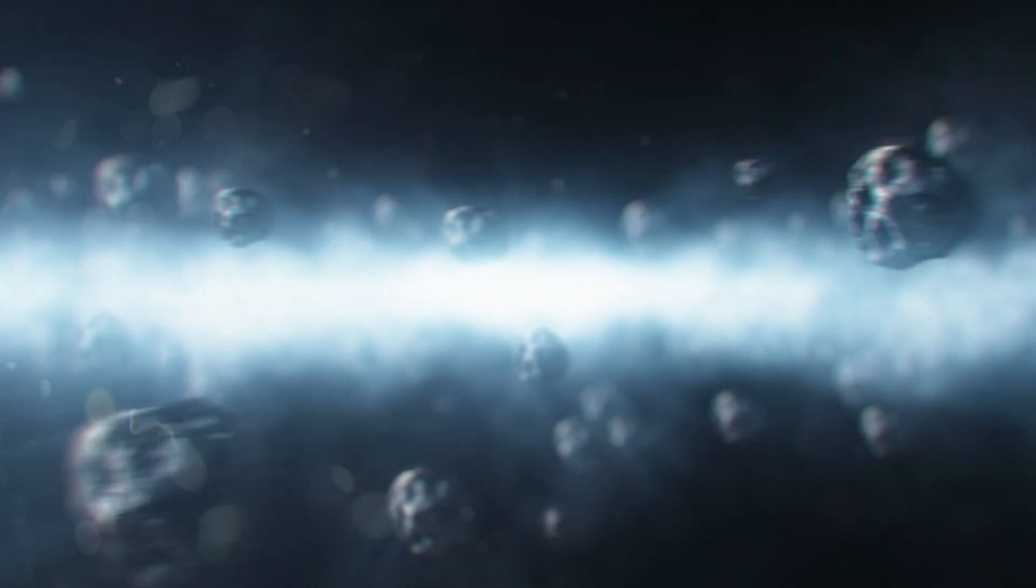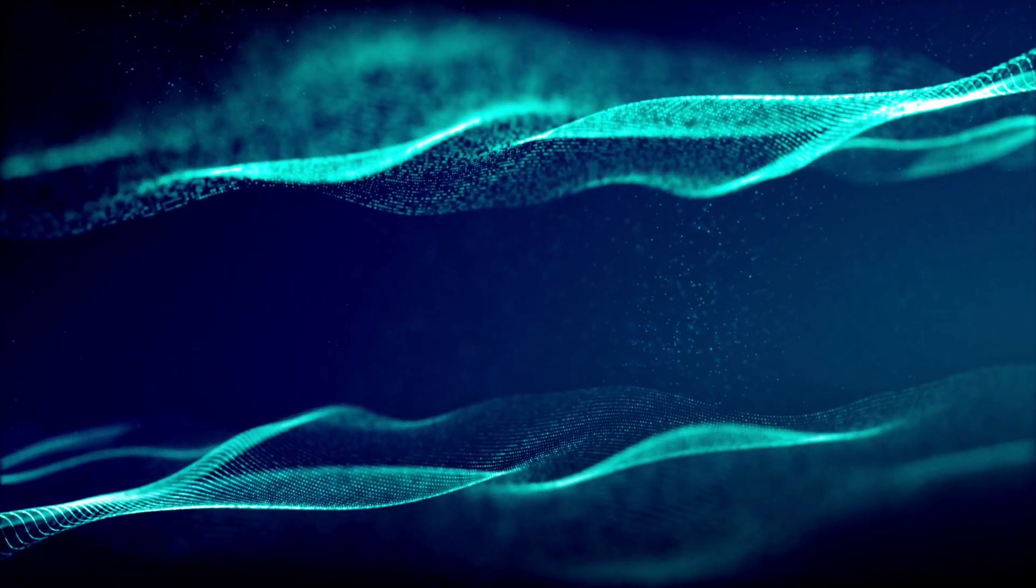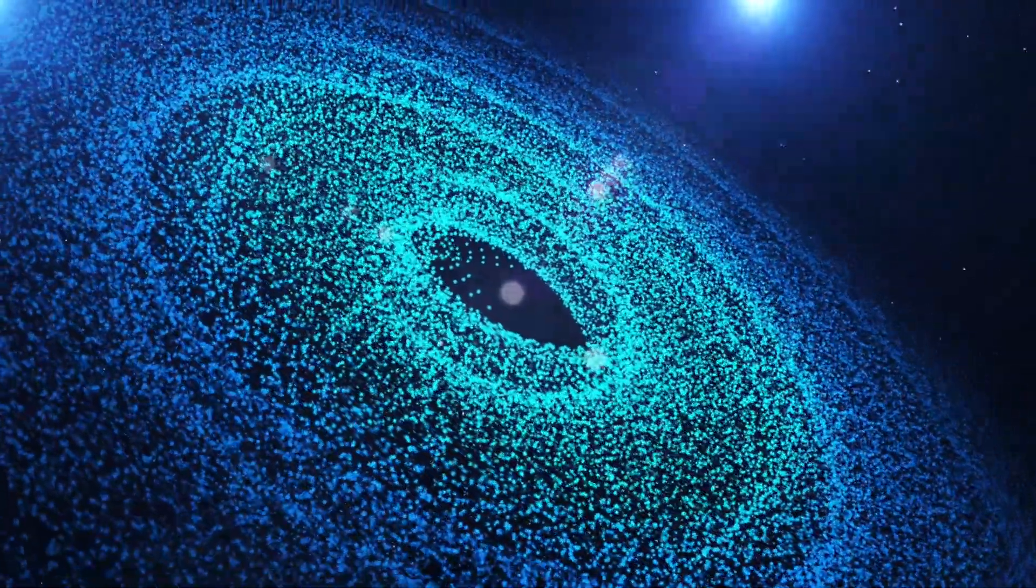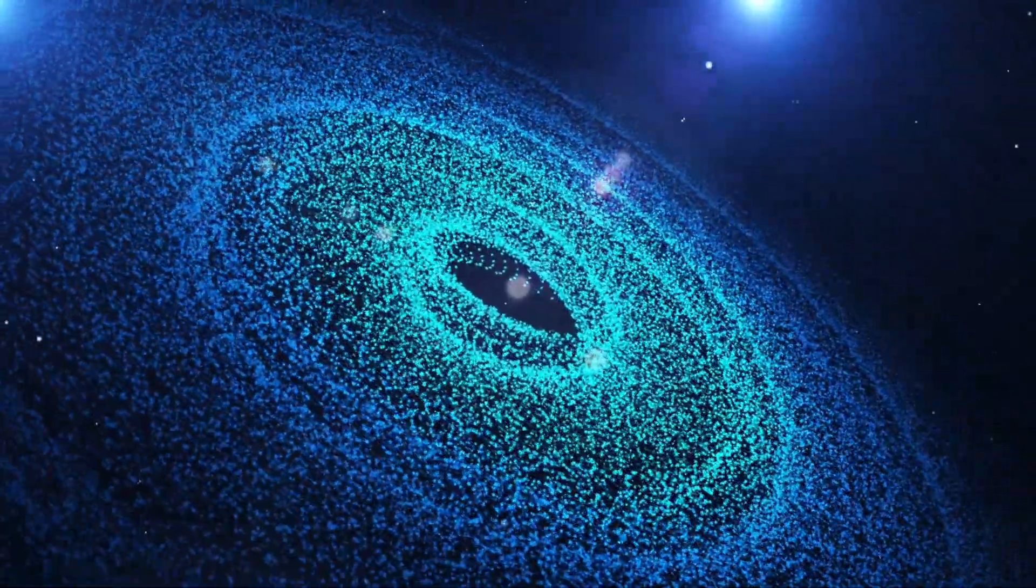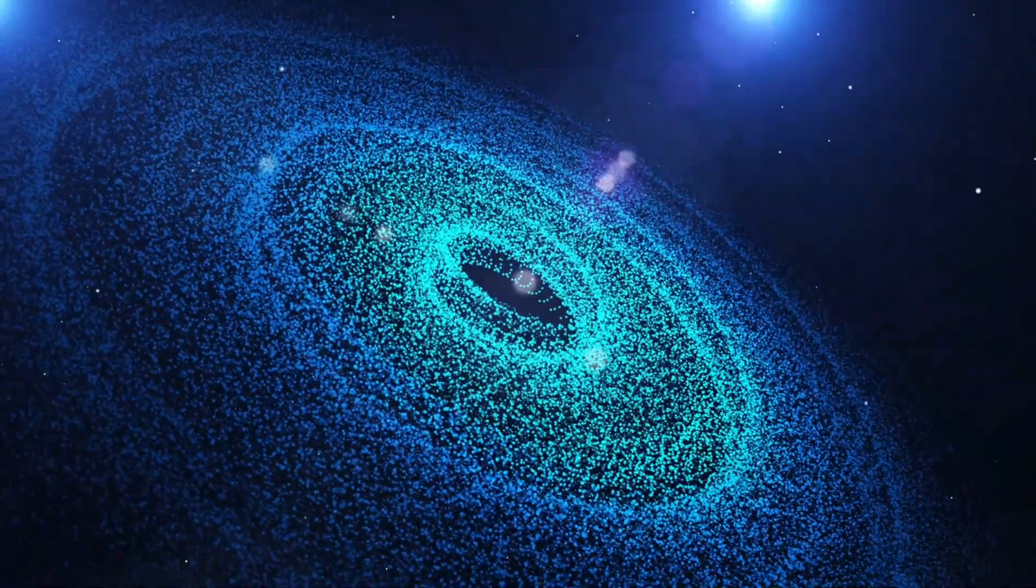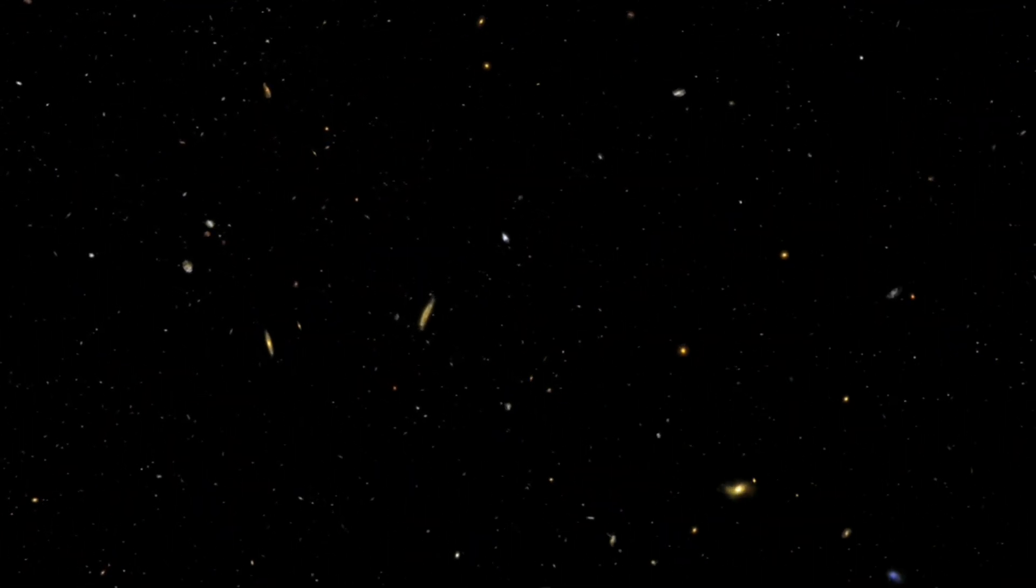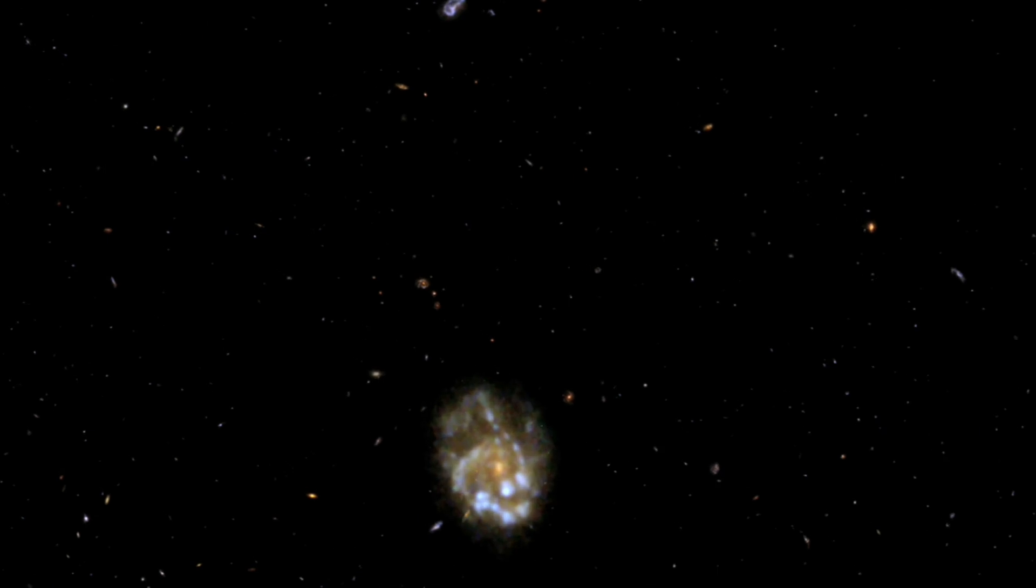But then we discovered things that don't quite obey this rule in the way we expected. Things like wave fronts, entanglement, and even the very expansion of space itself. To understand how this is even possible, we have to talk about space-time. Einstein's general relativity taught us that space and time are not separate things—they're one continuous fabric called space-time.